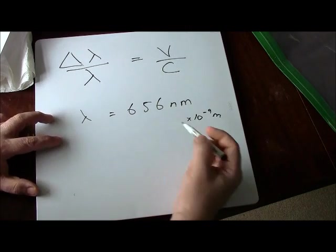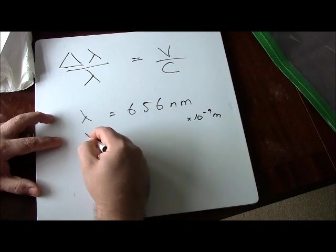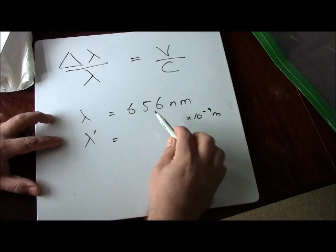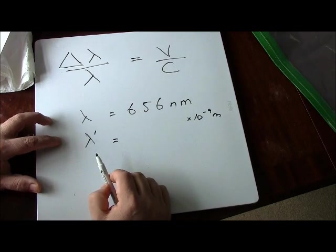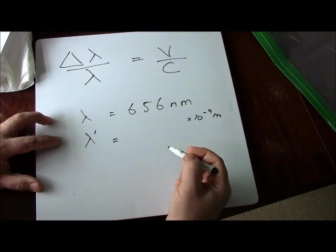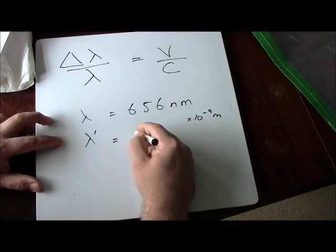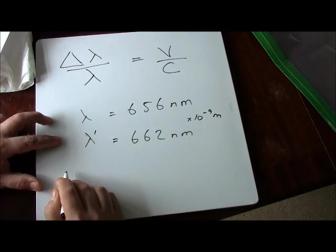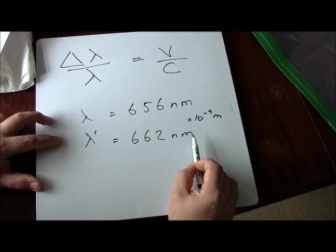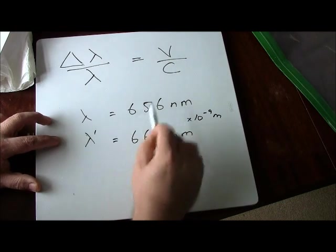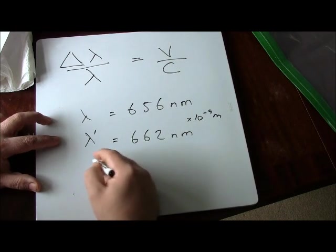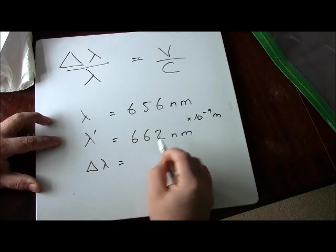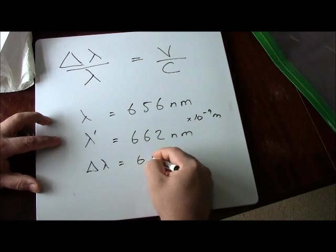Now let's say we observe a galaxy and we recognize this hydrogen alpha line. However, the hydrogen alpha wavelength is a little bit bigger than it should be. Let's say that it's 662 nanometers. Why is it bigger? Because the galaxy is moving away from us. It's been red shifted. So the difference between them is delta lambda. And so delta lambda is that minus that, which is 6 nanometers.